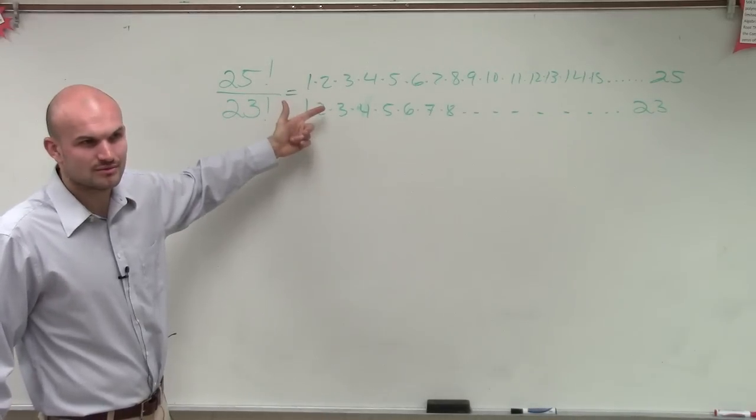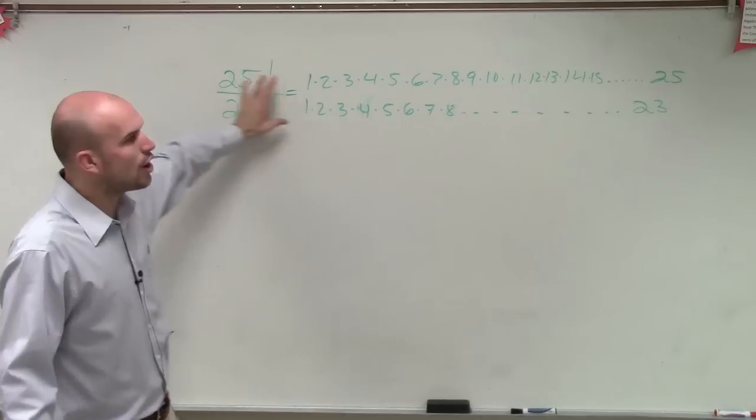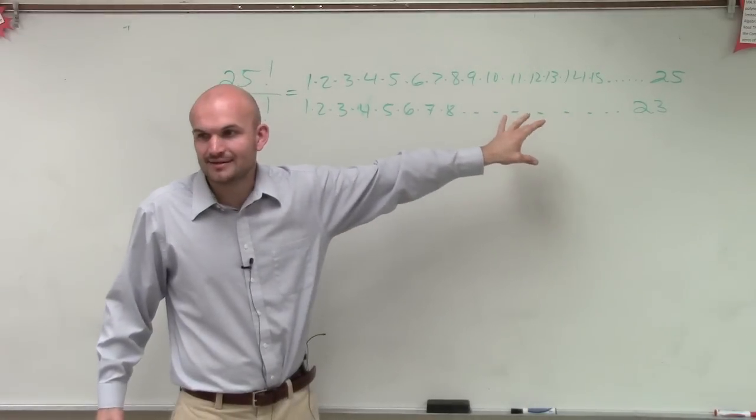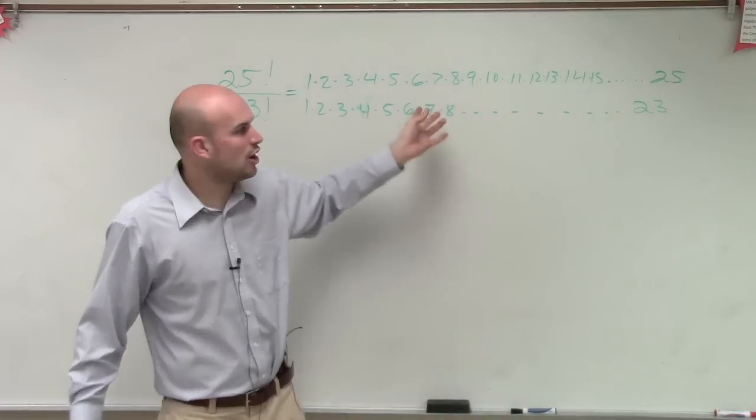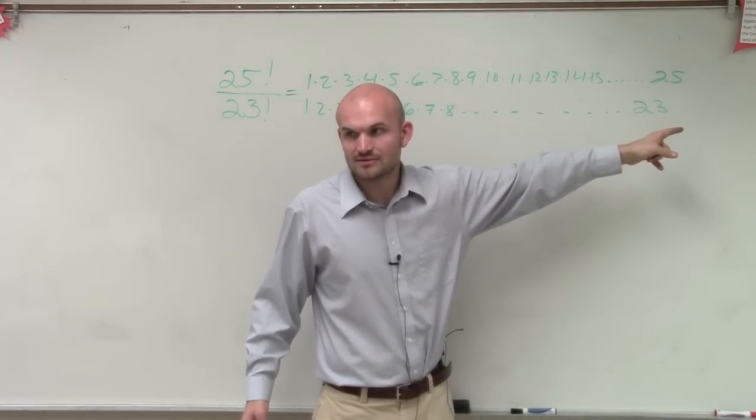2 divided by 2 is? 1. 3 divided by 3? 1. 4 divided by 4? 1. So these are all the same thing divided by each other all the way up to 23, right? Yep.